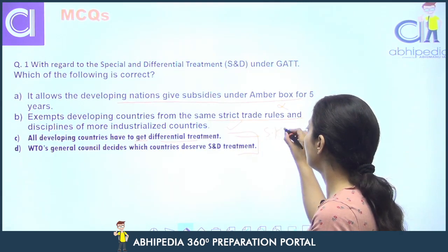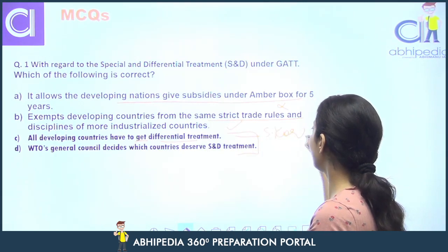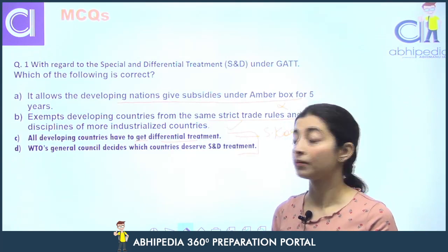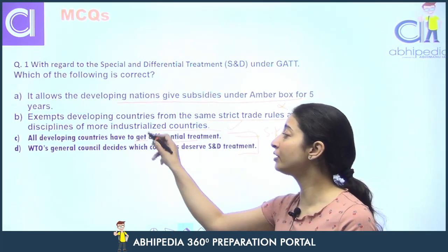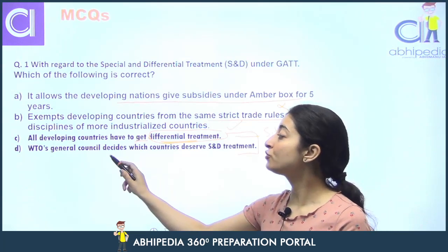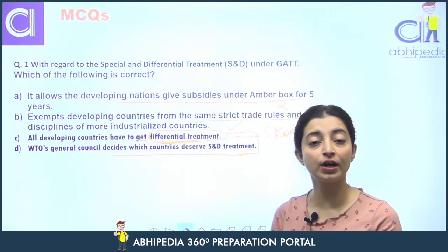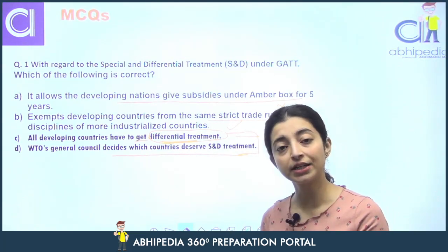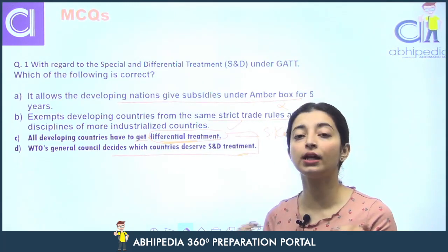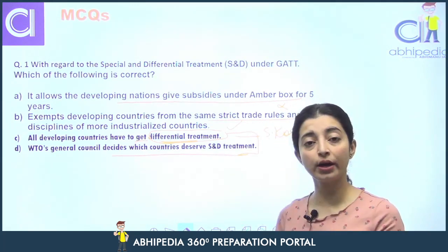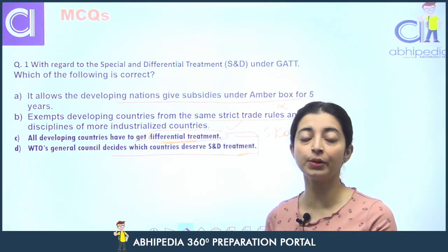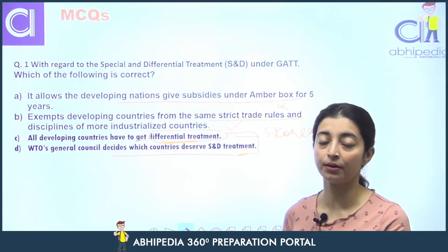For example, South Korea ne 2019 mein kaha tha ki mein apna developing nation status to WTO mein rakhunga, par mujhe ye jo differential treatment hai ye nahi chahiye. Statement D: WTO's general council decides which country deserves special and differential treatment — nahi, aisa kuch nahi hai. Abhi jo hai, WTO mein ek nation khud decide karti hai ki woh developed nation ki category mein aayegi ya developing nation ki category mein.